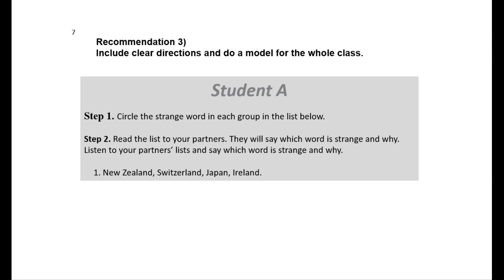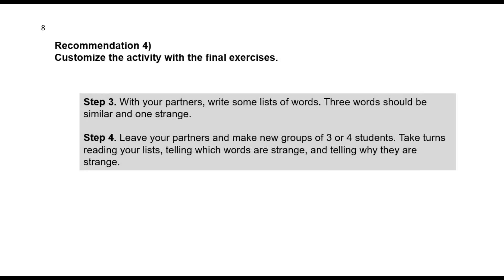Now they know how to carry out the activity and incorporate the important expressions. So we put them in groups of threes and they do step two. This brings us to recommendation four: customize the activity with final exercises. Step three: with your partners, write some lists of words — three words should be similar and one strange. Step four: leave your partners and make new groups of three or four students. Take turns reading your lists, telling which words are strange and why.